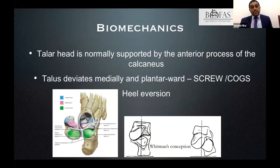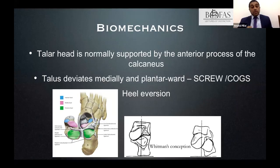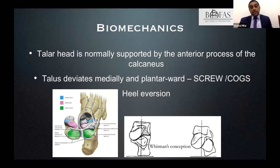The talar head is supported by the anterior process of the calcaneum, and the talus is intimately related to the calcaneum through three facets. Think of this as two interlocking cog wheels — as the talus moves forward, the calcaneum moves out of the way into eversion or valgus.